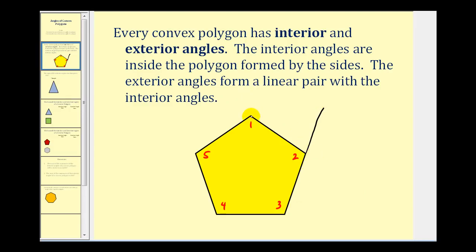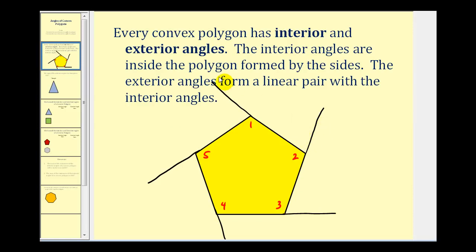I'll go ahead and work my way around the pentagon extending each side — this side, this side, this side, and this side. Notice we have a five-sided polygon and I extended five sides to form the exterior angles.